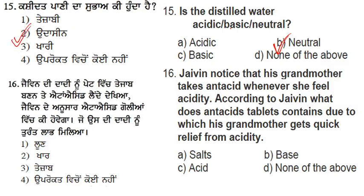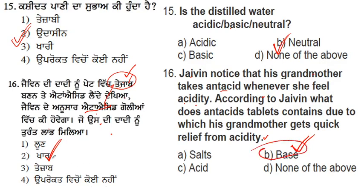Jaywan's father had acidity, and his mother gave him an antacid. Antacid is basic in nature — it neutralizes the excess acid in the stomach. So the correct answer is that antacid will be a base.